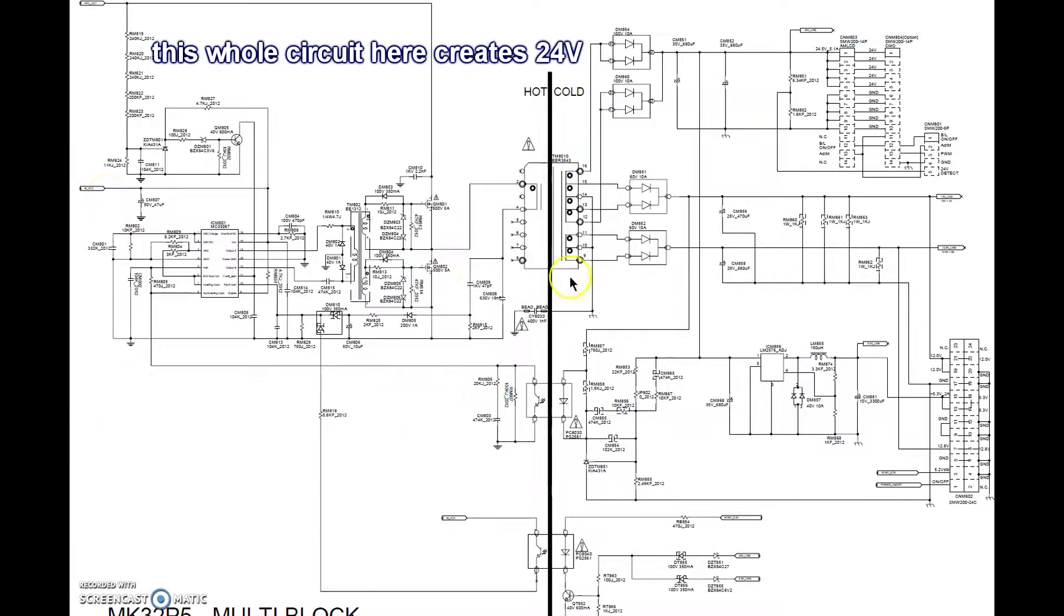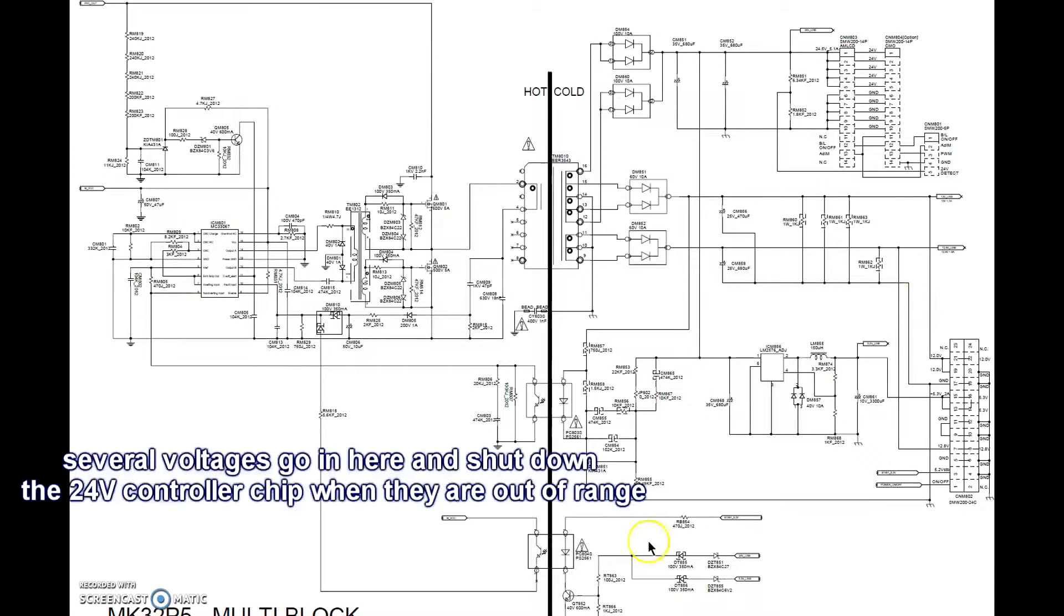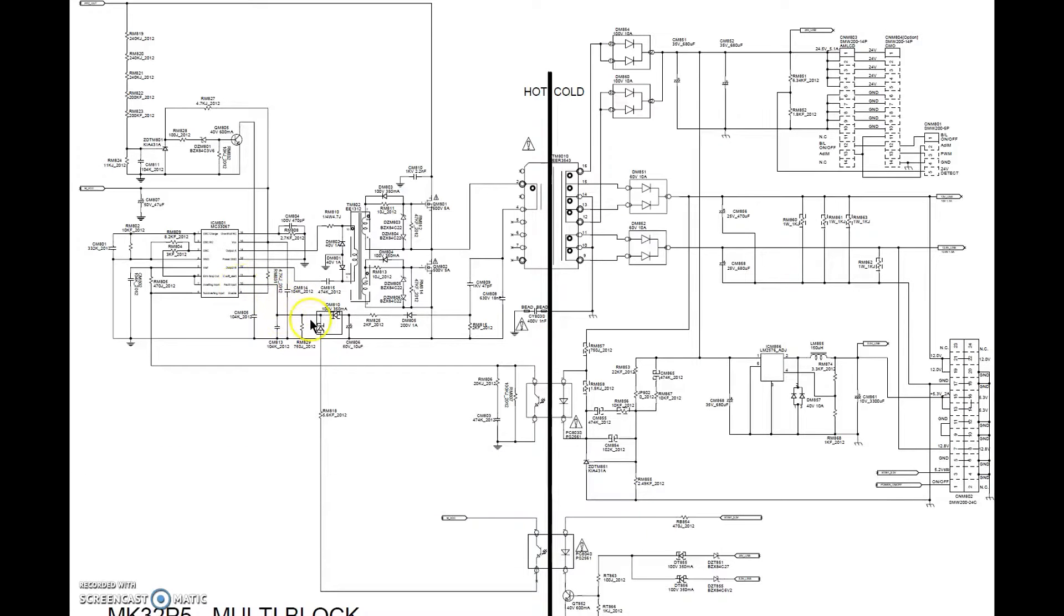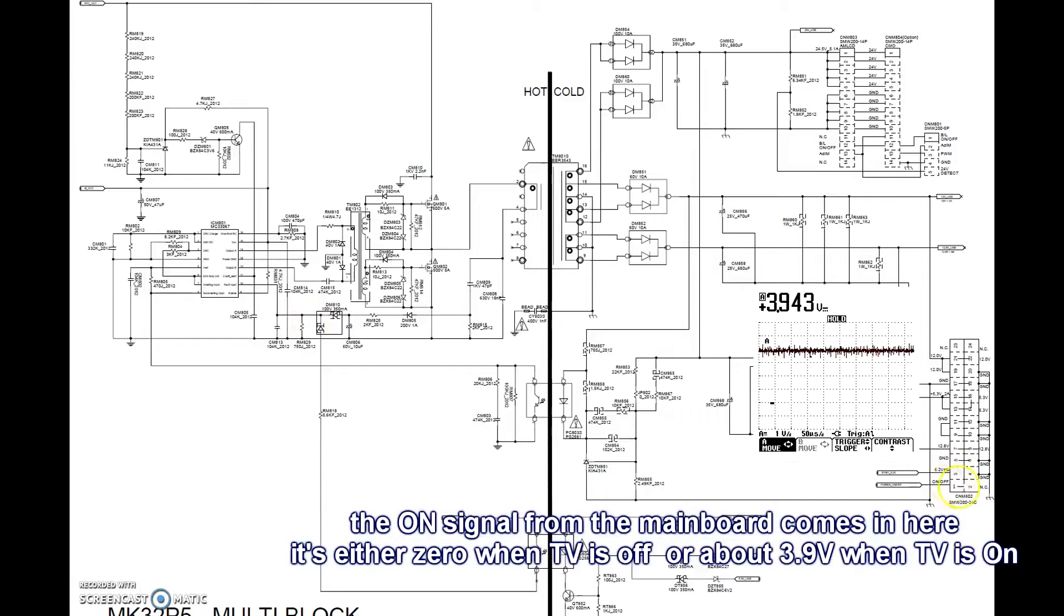This whole circuit here creates 24V, 12V as well and 5.3V, an additional 5.3V power supply. And this one here is actually a protection circuit. Several voltages are used here and if they are out of range, they will shut down the 24V power supply controller chip.